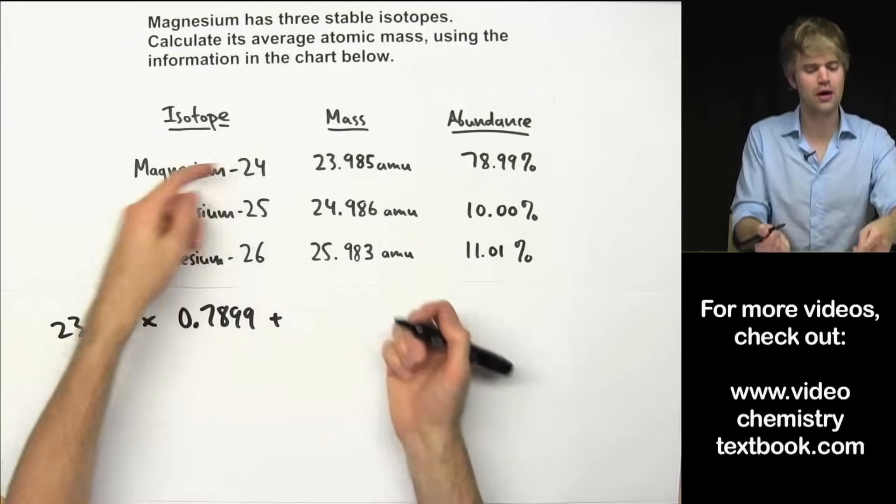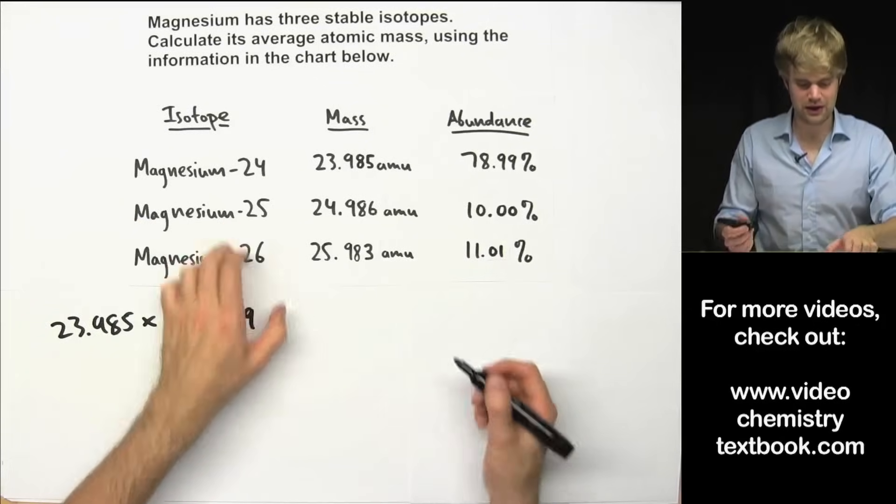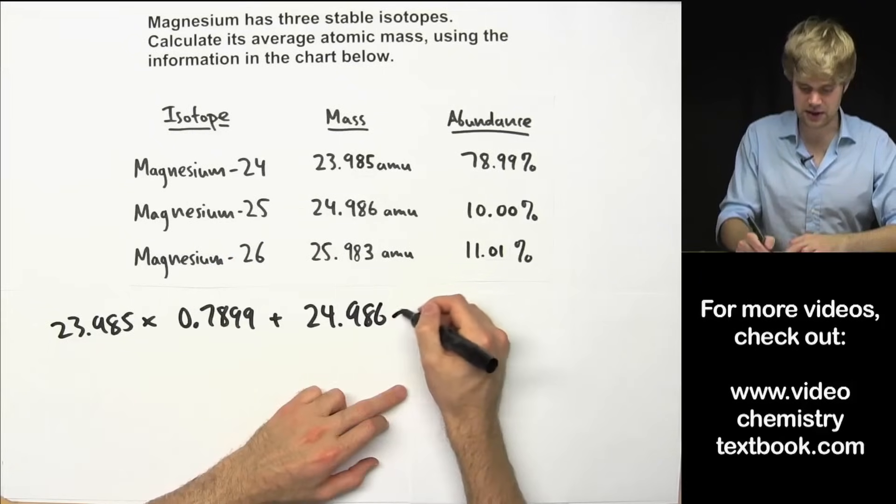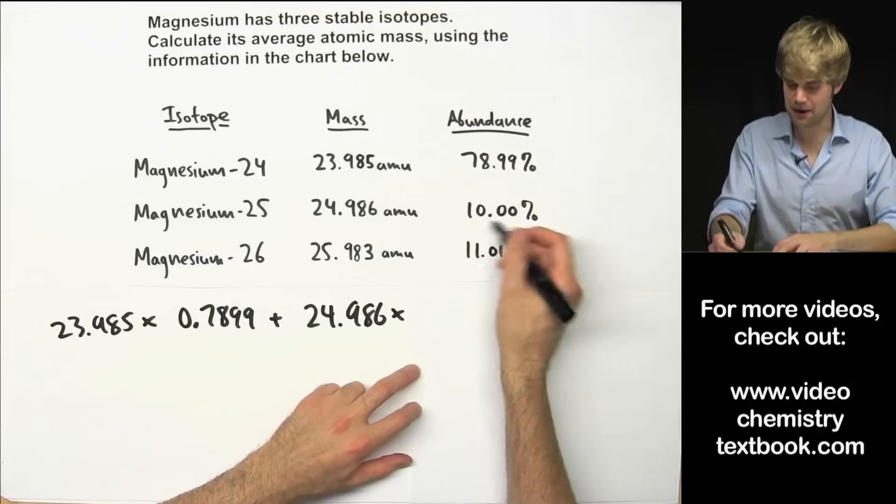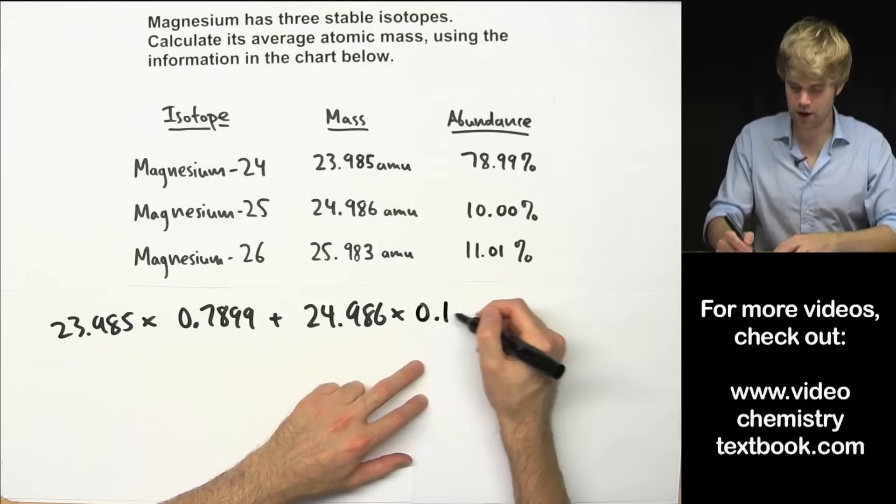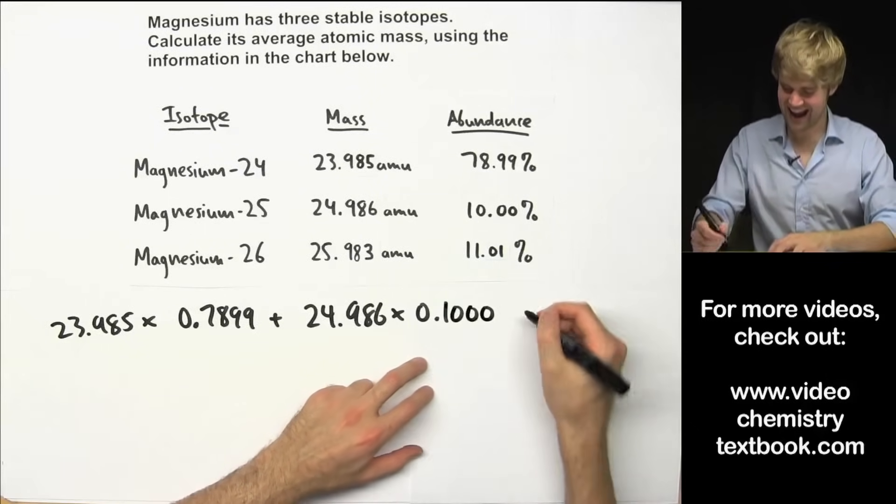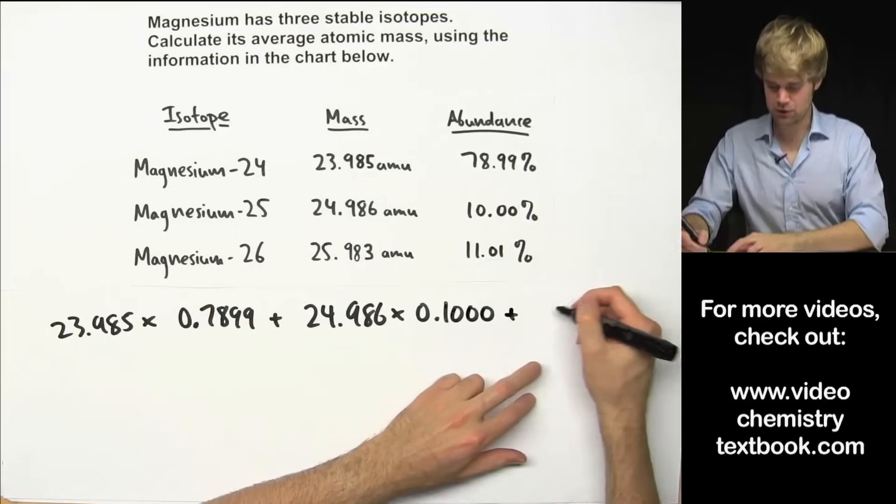That was magnesium-24. Now we're going to go on to magnesium-25. Take its mass, 24.986, multiply that by its abundance as a decimal so 0.1000. And then finally magnesium-26.